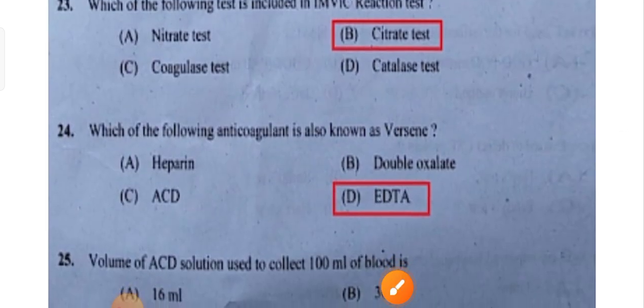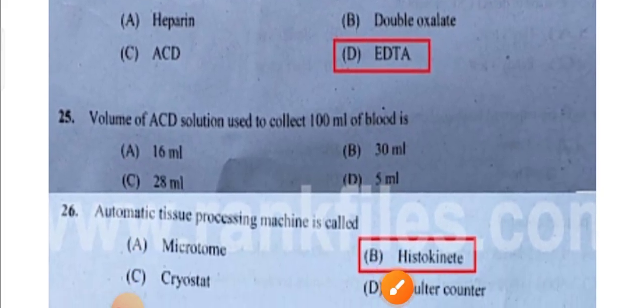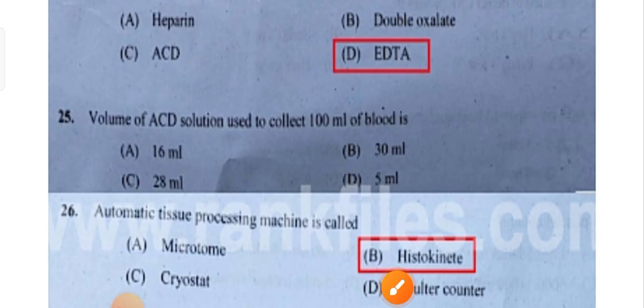Which of the following anticoagulants is also known as Versene? EDTA — it has two names: Versene and EDTA.